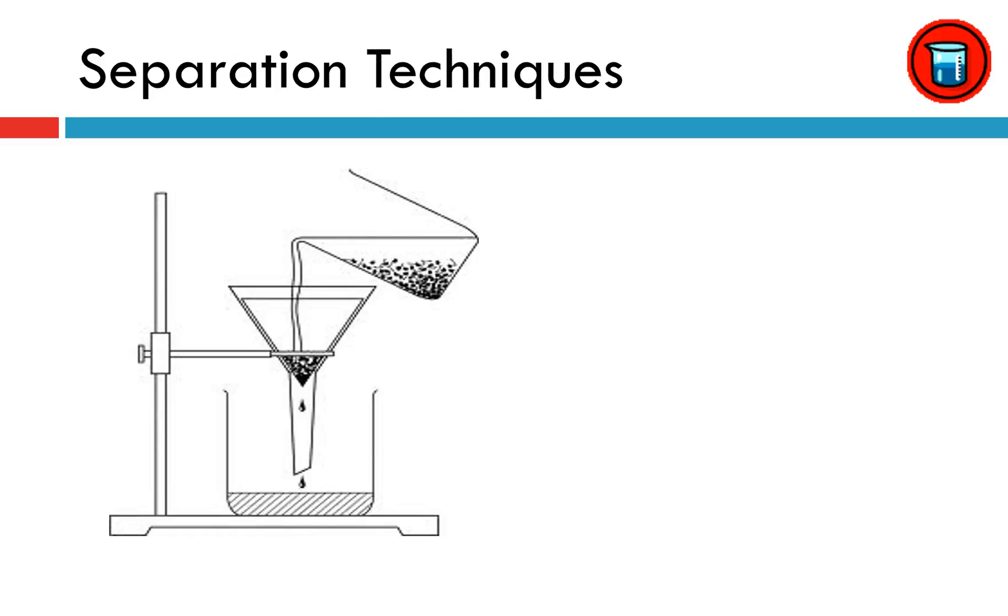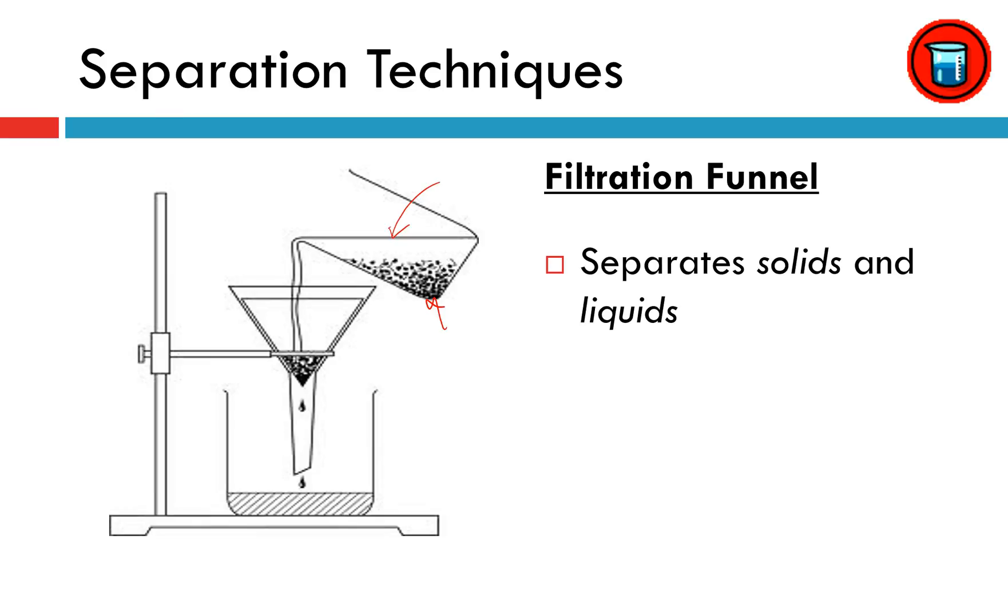First, we've got this apparatus, which is called a filtration funnel. Based on the picture, hopefully you can see that we've got some solid sitting in the bottom of this beaker, and then we've got some sort of liquid on top of it. So filtration funnels are used to separate solids and liquids. The idea is, as you pour your sample out of the beaker, it's going to - the liquid is going to pass through and your solid gets caught in the filter paper. So solids cannot pass through the filter paper.